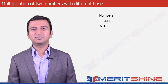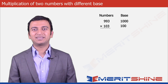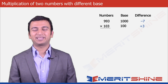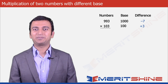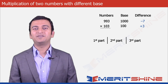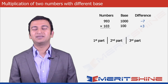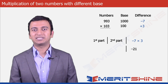Here our bases would be 1000 and 100 respectively, and our differences would be minus 7 and plus 3. Let us proceed to write down our answer which would be in 3 parts. The third part would be the product of the differences — minus 7 into plus 3 — which is minus 21.